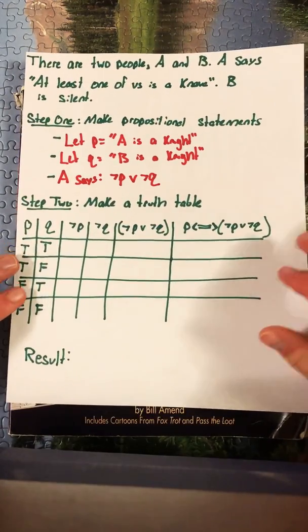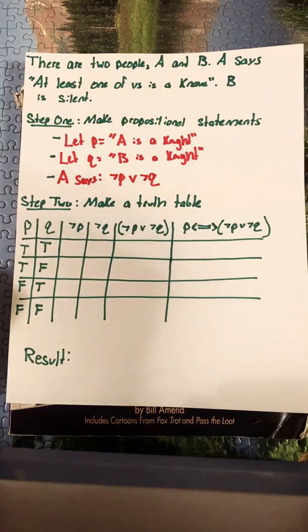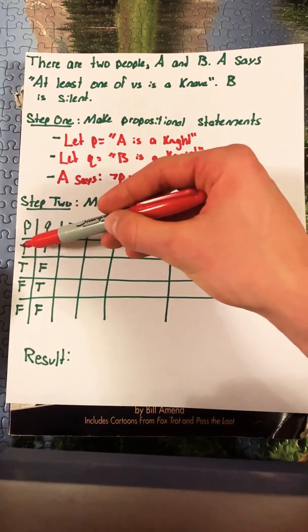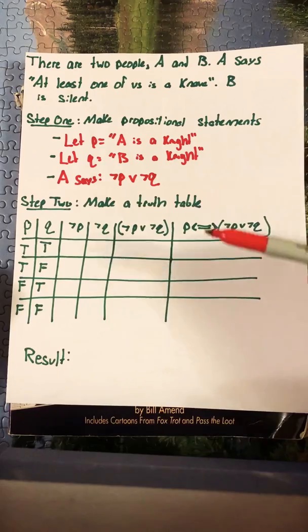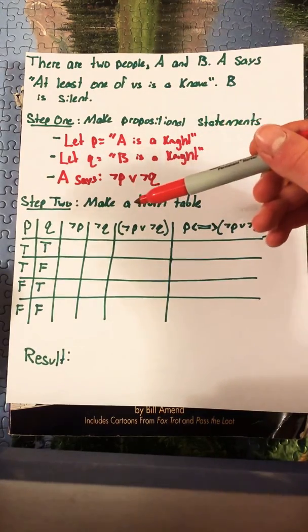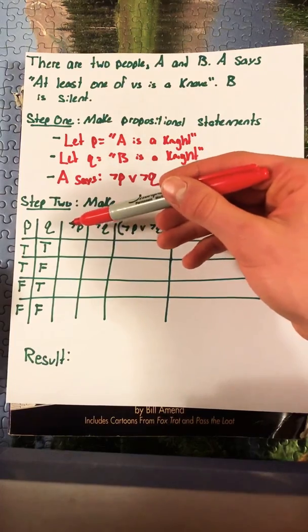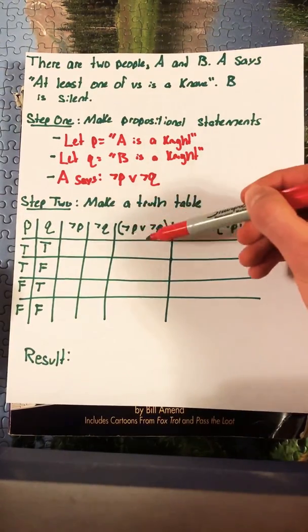Our second step is making a truth table. I first set up P and Q. I like to set up so that P is true true false false and Q is true false true false. After that you want to set up the different parts of the propositional statement. So we've set up not P here and not Q here. Together these will form not P or not Q.